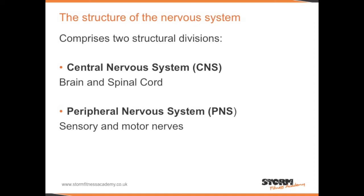The structure of the nervous system. The nervous system comprises two structural divisions: the Central Nervous System, also known as the CNS, which is made up of the brain and the spinal cord; and the Peripheral Nervous System, also known as the PNS, which is comprised of the sensory and the motor nerves.